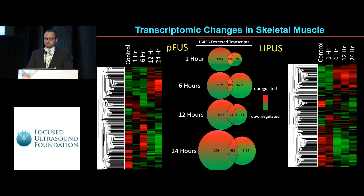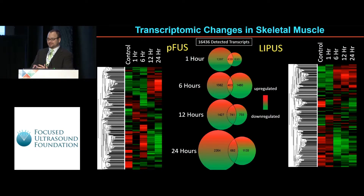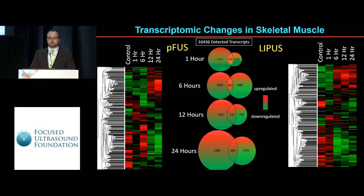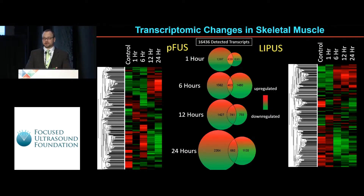One thing we want to look at is to compare the two modalities. We can see in the Venn diagrams in the middle that there's some overlap in the gene changes, but the majority of the changes are unique to each modality. And notably, if you look at pulse-focused ultrasound at the 24-hour time point — this is one total second of sonication in the muscle — at 24 hours, nearly 20% of the transcriptome is still different. RNA-seq is a tool that allows you to easily appreciate the level and breadth of biology going on here.